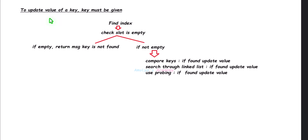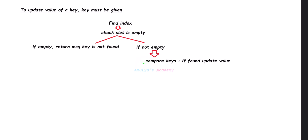So let's see. To update a value of a key, the key must be given. Using that key, find the hash value, then use that to find the index. At that index, check whether the slot is empty or not. If the slot is empty, return the message 'key is not found'. If the slot is not empty, and it is a basic hash table without collision, you just need to compare the keys. If the key is found, update its value.